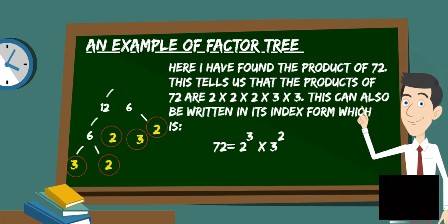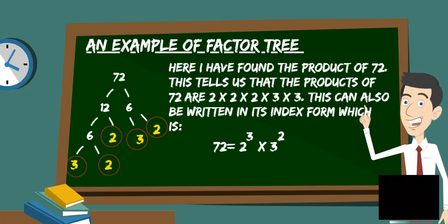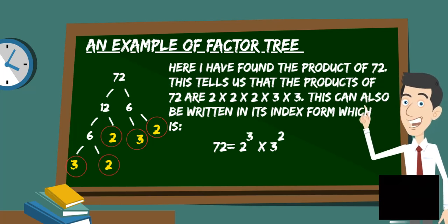Here I have found the product of 72. This tells us that the products of 72 are 2 times 2 times 2 times 3 times 3. This can also be written in its index form which is 72 equals 2 cubed times 3 squared.